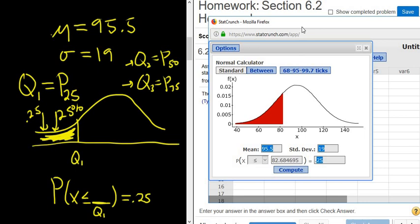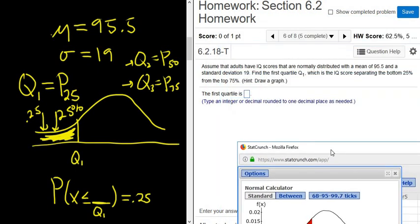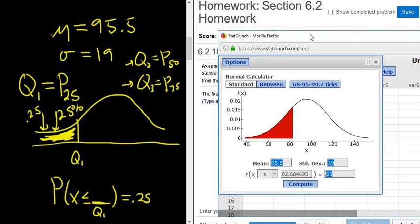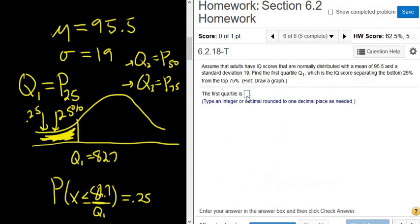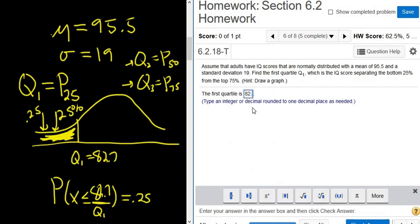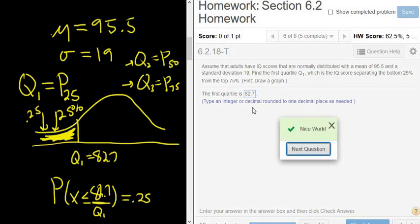Click compute. There it is. So one decimal, so it would be 82.7. So that should be the answer. So the answer is 82.7. So Q1 is 82.7. So let's go ahead and type that in. 82.7. And that's it.